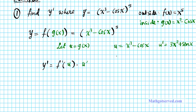Now, what is f of u? The outside function f of x is x to the fifth. So f of u simply involves replacing x with u, giving us u to the fifth power. Then f prime of u — applying the power rule — is 5u to the fourth power. We now have everything we need.